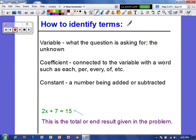So here's some helpful tips on how to identify the terms. The variable is what the question is asking for and that's just whatever it is that we don't know in the problem. The coefficient, now remember a coefficient is the number that is being multiplied by the variable, that's connected to the variable with a word like each, per, every, etc.